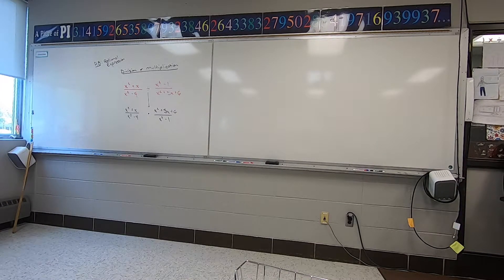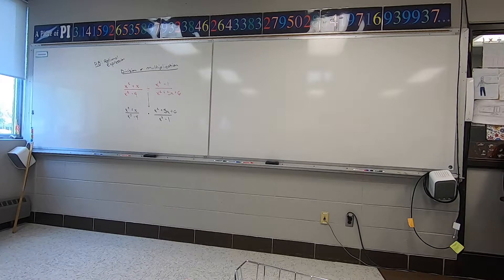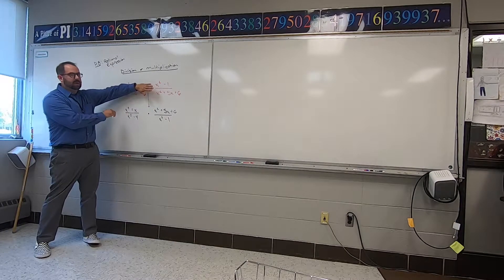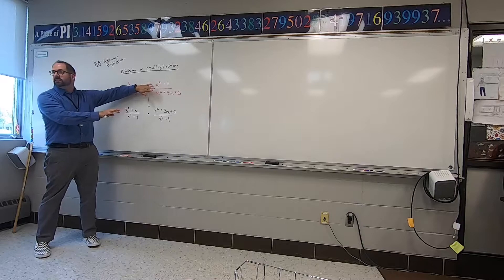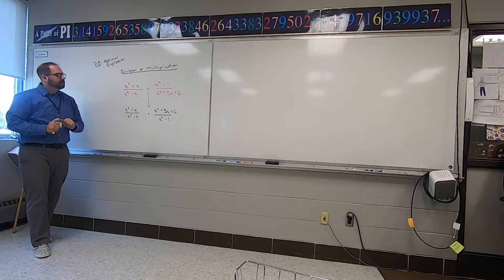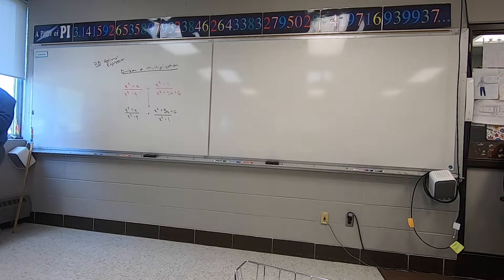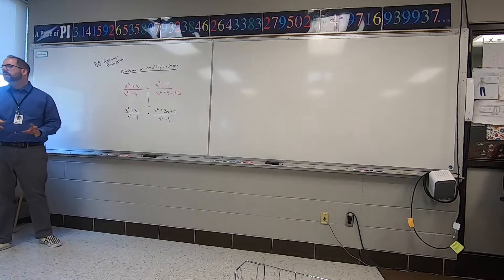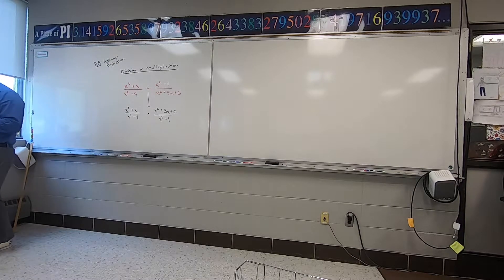Does everyone understand the first step? You switch the division sign to multiply, and then you flip it. Now if it was just straight-up multiplication as your problem, it just stays — if it's multiplying, it will just stay where it's at. Sorry, I'm going a little fast. I tend to write pretty quick.